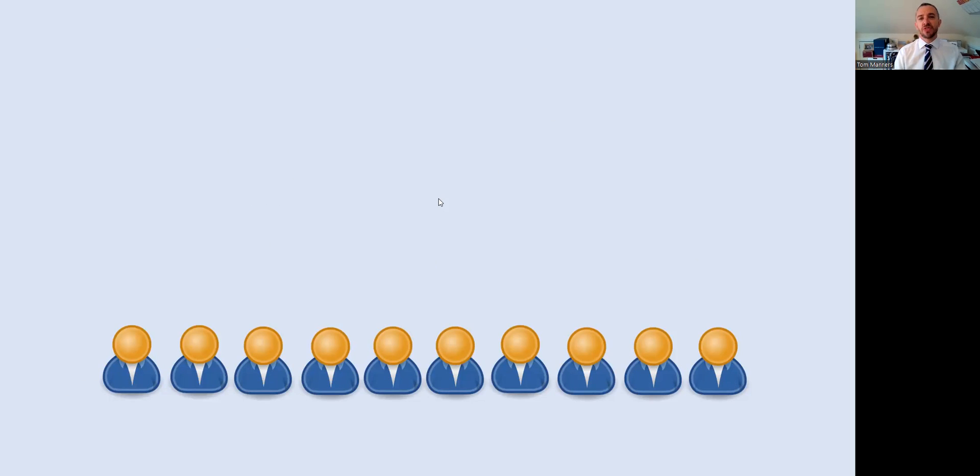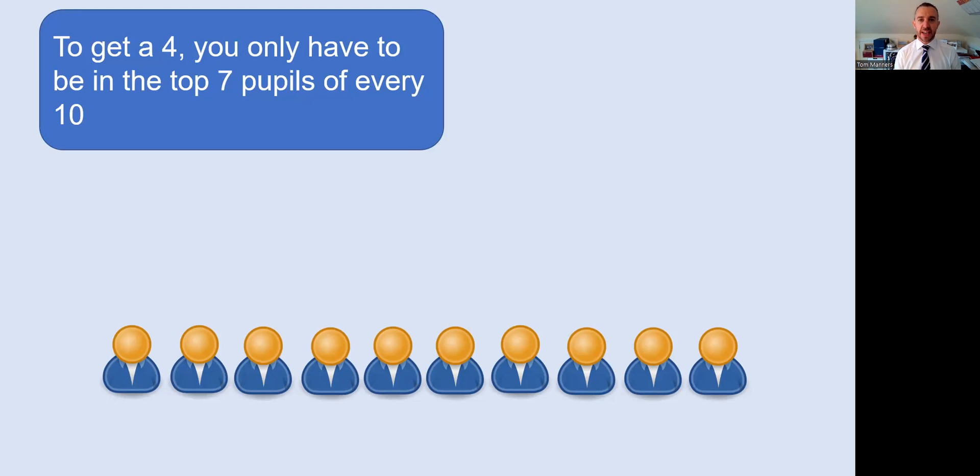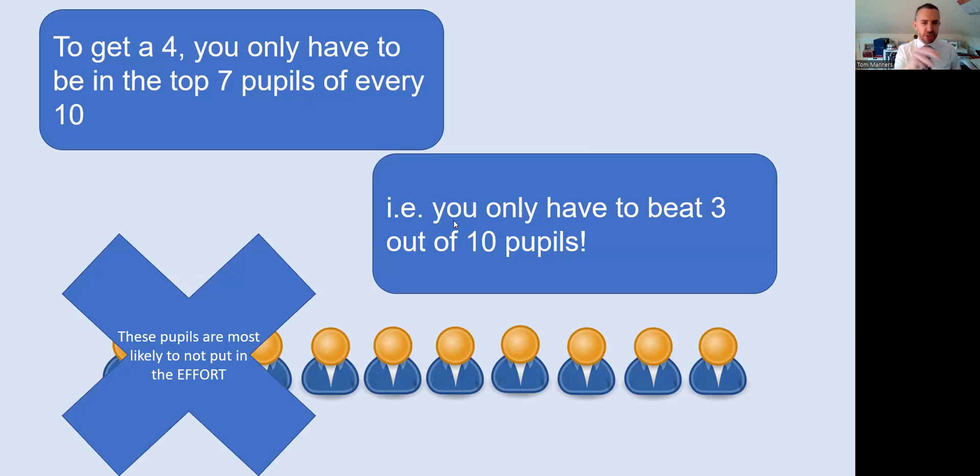When you take on your GCSEs, about 700,000 students around the country are going to do their GCSEs in the next few weeks. To get a four, you only have to be in the top seven pupils of every ten. So what about those bottom three, the ones you have to beat? These are the pupils most likely not to put in the effort. They're the ones in the exam hall who will have their head down, given up, won't bother rereading questions, will just doodle, won't use every minute of the exam. You can put in the effort because that one more mark can beat other people.